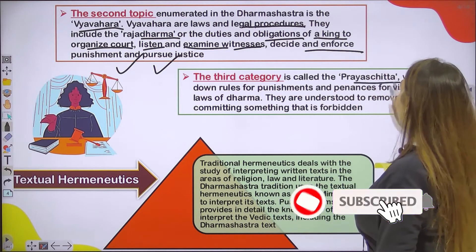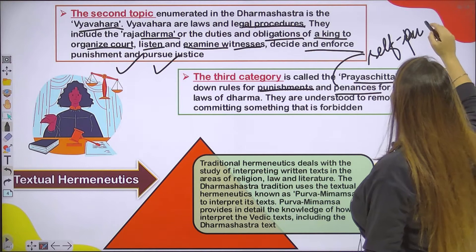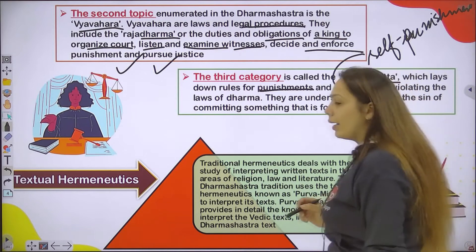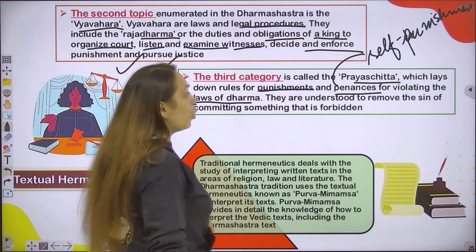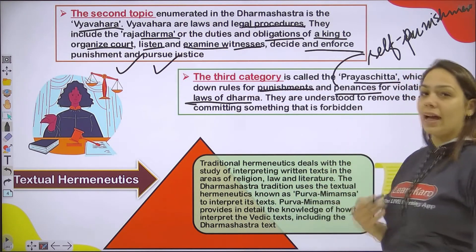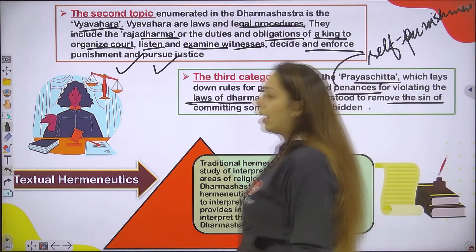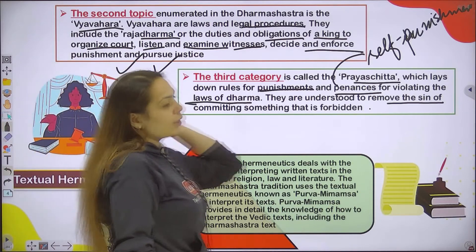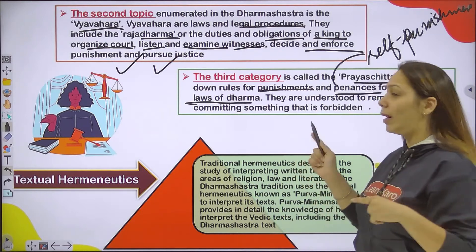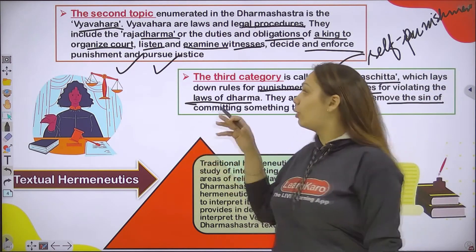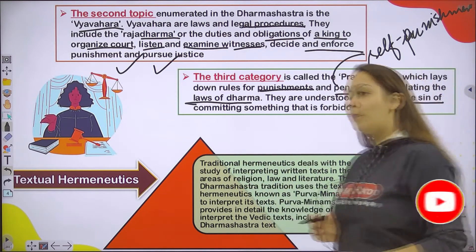The third category is called Prayashtit, which lays out rules for punishments and penances. Penances means self-punishment. If you have violated the laws of Dharm — if you don't follow the laws — Prayashtit says what the rules are, what the punishment is, and what self-punishment applies. These penances are understood to remove the sin of committing something that is forbidden.